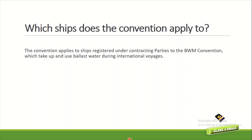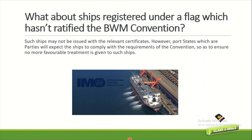Which ships does the convention apply to? The convention applies to ships registered under the contracting parties to the BWM Convention which take up and use ballast water during international voyages. For ships registered under a flag which has not ratified the BWM Convention, such ships may not be issued the relevant certificates. However, port states which are parties will expect those ships to comply with the requirements of the convention, so as to ensure no more favourable treatment is given to such ships.